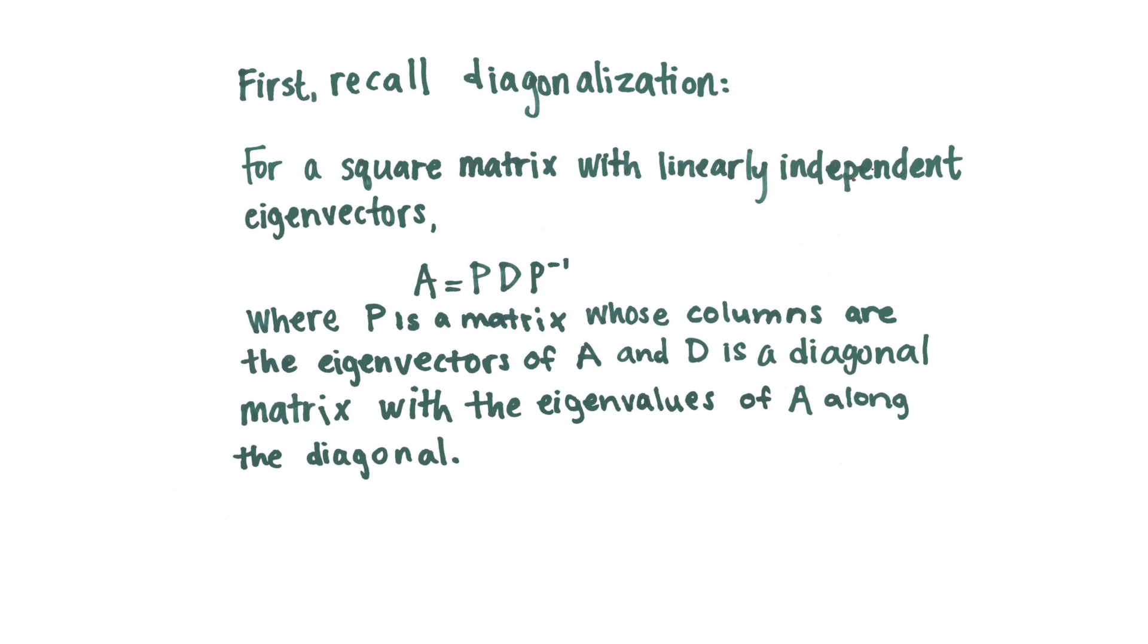Before we jump into SVD, let's look at diagonalization real quick. For a square matrix with linearly independent eigenvectors, we're going to call it A.